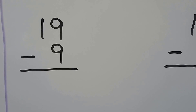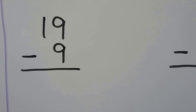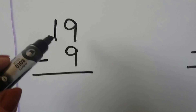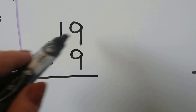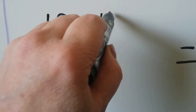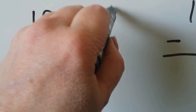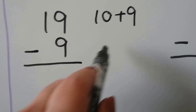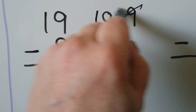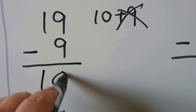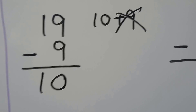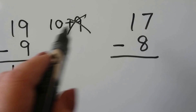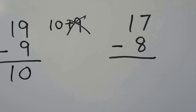19 minus 9. We can use a 10 to subtract. 19 is a 10 plus 9, isn't it? And if we take the 9 away, we're left with 10. And that would be using addition to help us subtract.